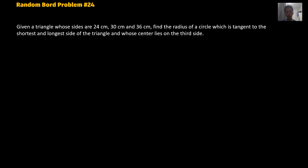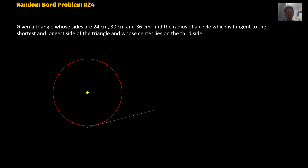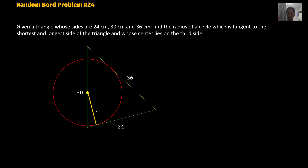So first, let's draw the figure. We have a circle, and the unknown is the radius of the circle. The shortest side is tangent to the circle — that's 24 cm. The longest side is also tangent to the circle — that is 36 cm. And the third side, 30 cm, lies on the center of the circle. So the radius R connects from the center of the circle to the point of tangency.